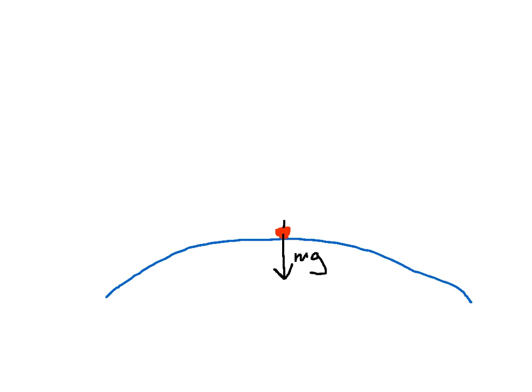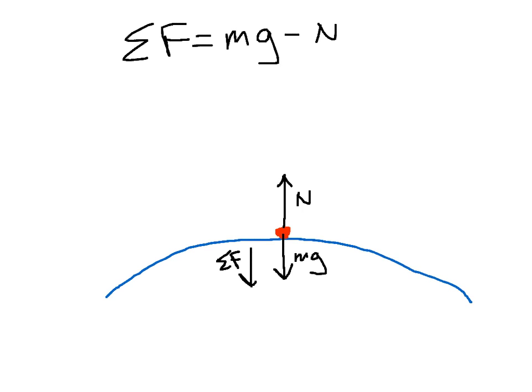A vehicle going over the crest of a rise — we consider this an example of circular motion. You might have seen rally cars going over the crest of a hill and becoming airborne. Again, we have a weight force that acts straight down, and in this case the normal reaction force actually acts vertically up. Because it's in circular motion, the net force must act downwards towards the centre. Considering the direction of these arrows, we get the expression: net force equals mg minus N. It's very important that you're able to sketch these diagrams and derive these formulas.